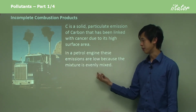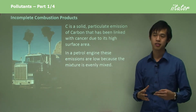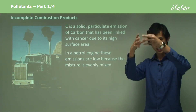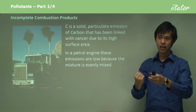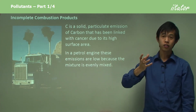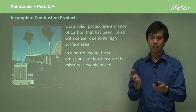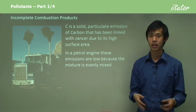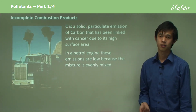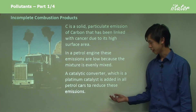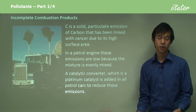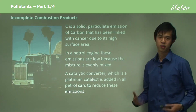In a petrol engine, these emissions are quite low because the mixture is really well mixed. In a petrol engine cylinder, you spray some fuel in, the piston comes up, a spark occurs, and it burns. The fuel is at stoichiometric conditions — basically enough to be completely burned — which is why petrol engines don't suffer much from CO and C emissions. A catalytic converter, which is a platinum catalyst, is added in all petrol cars near the tailpipe to reduce these emissions anyway, just to be safe.